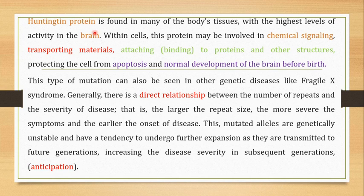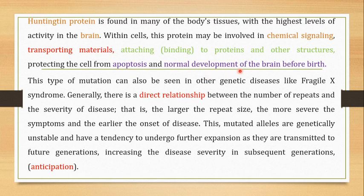What does huntingtin protein normally do in the body? Huntingtin protein is found in many body tissues, but at highest levels in the brain. Within cells, the huntingtin protein plays a role in chemical signaling, is involved in transporting materials, is responsible for attaching to proteins and other substrates, protects cells from apoptosis, and is very important for normal brain development before birth. If the huntingtin protein gets mutated, all of these functions will be affected, resulting in Huntington's disease.